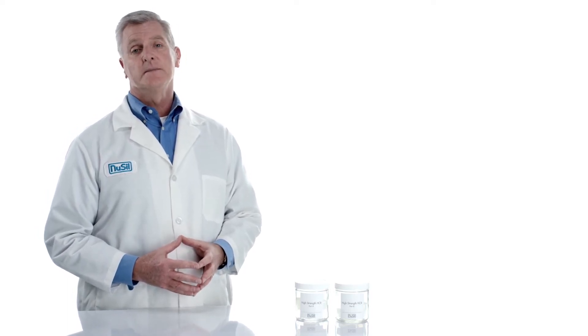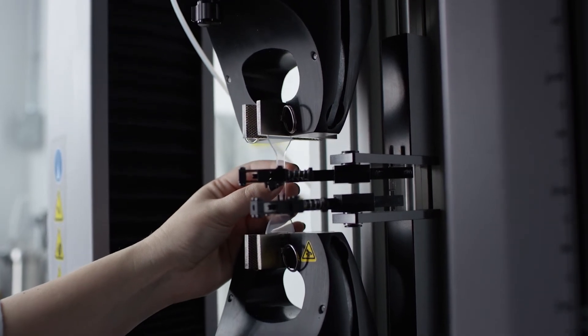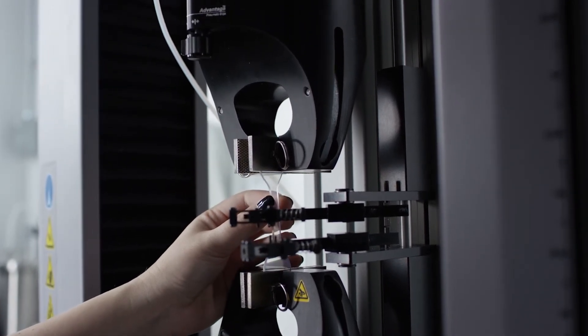One way we characterize these materials more quantitatively is by looking at their stress strain behavior. Today we're going to test two different relatively soft 30 durometer silicone elastomers. First let's take a look at a standard two-part platinum cure material.